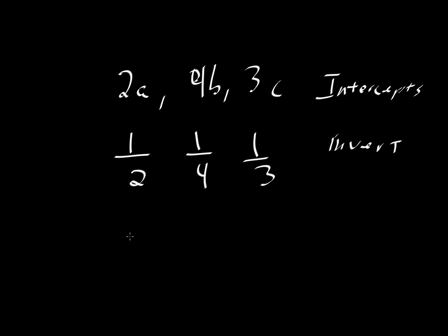The easiest way to do that here would probably be to multiply by 12. So 12 divided by 2 is 6, divided by 4 is 3, and divided by 3 is 4. So the Miller indices, if we've done the math correctly, would be 6, 3, 4.